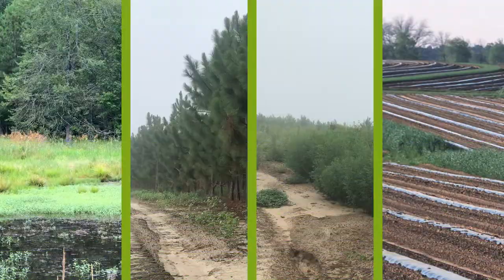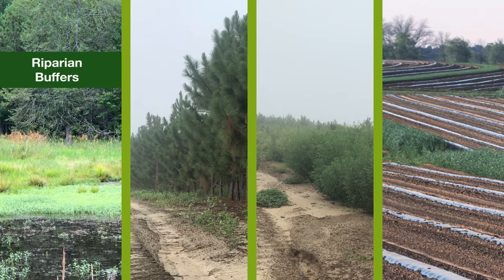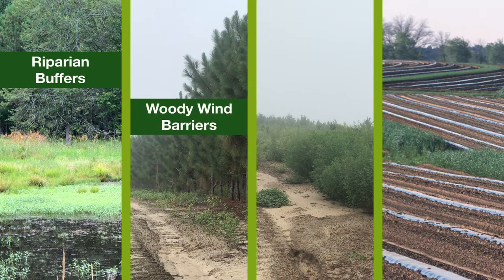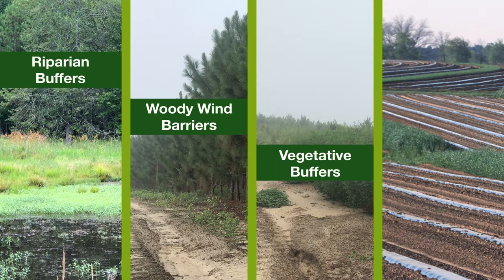Different types of buffers include riparian buffers, woody wind barriers, vegetative buffers, and contour grass strips.